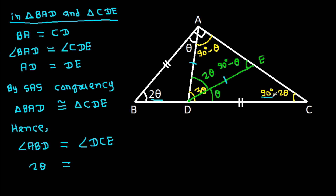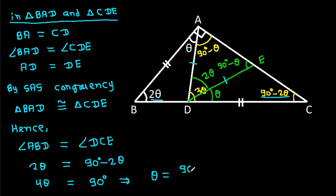So 4 theta will be 90 degrees minus 2 theta. Therefore 4 theta will be 90 degrees, and theta will be 90 degrees over 4, which gives us theta equals 22.5 degrees.